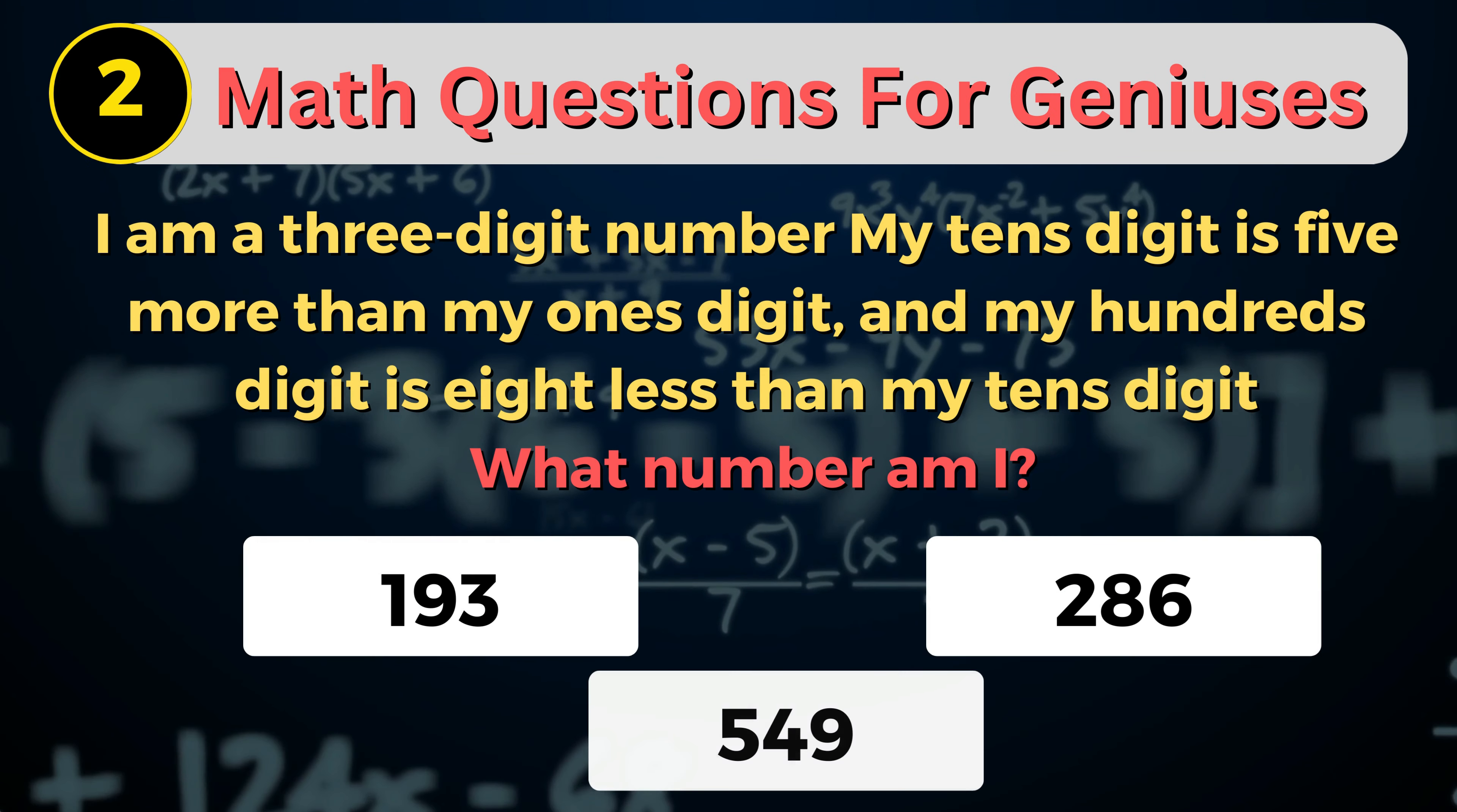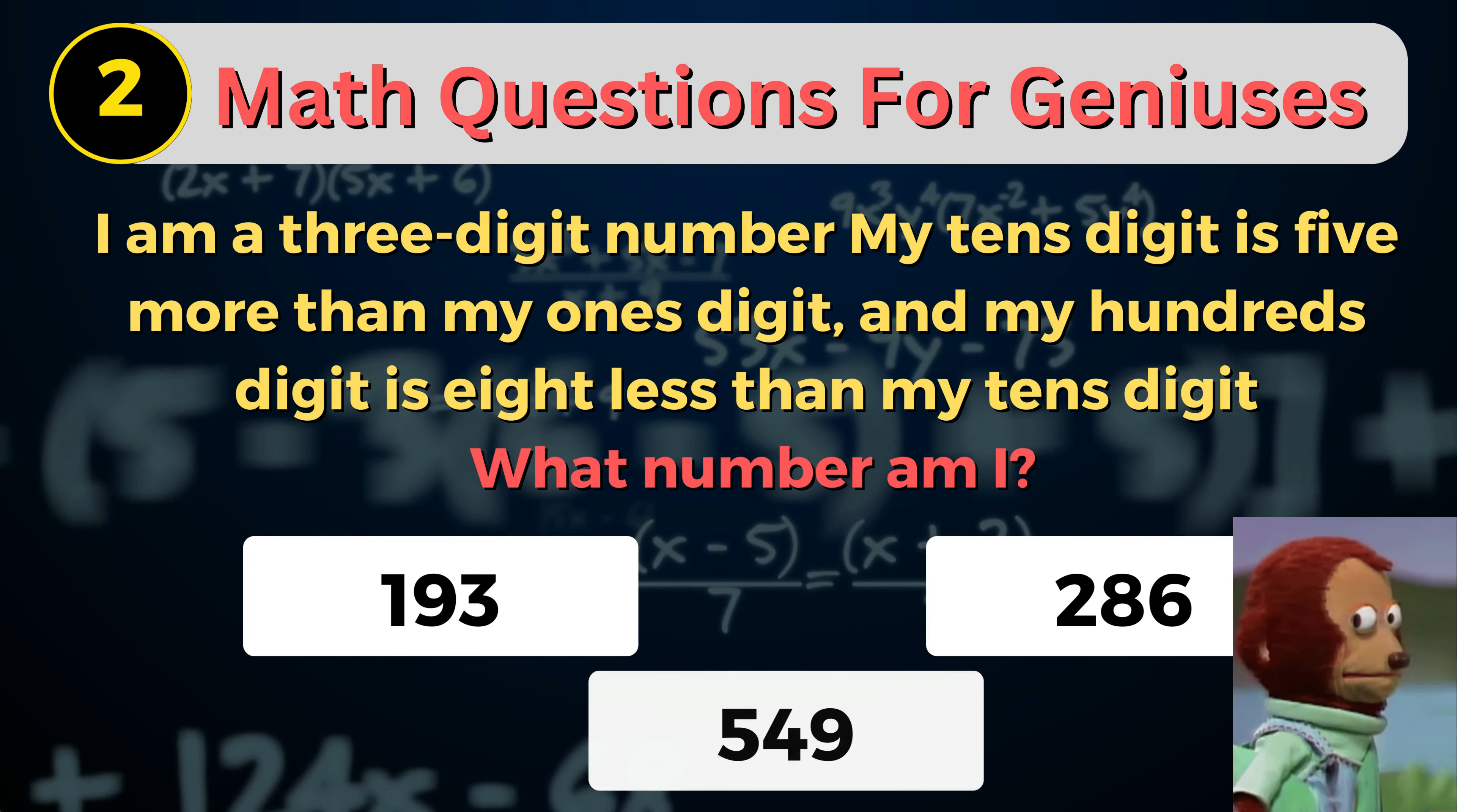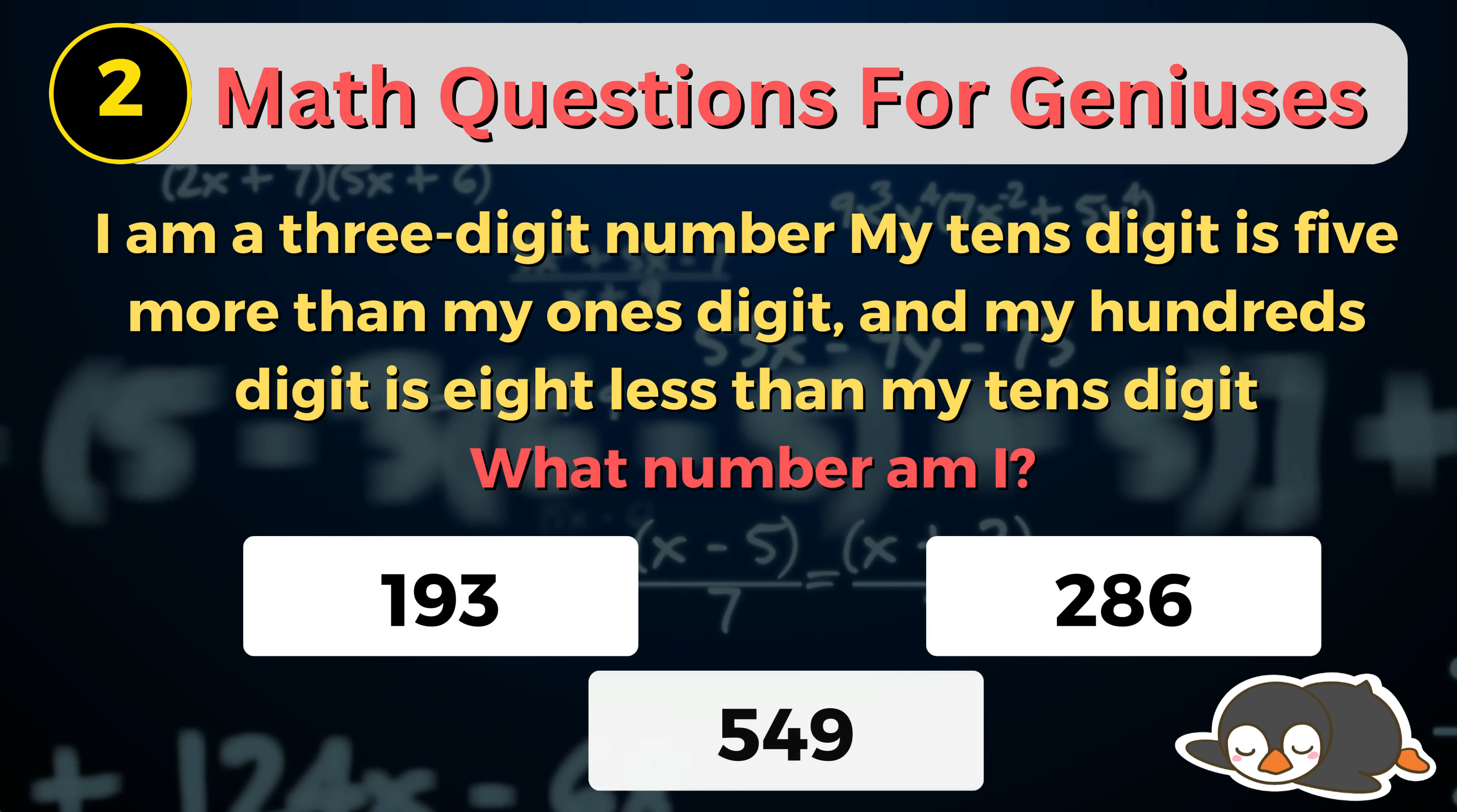Number 2. I am a 3-digit number. My 10's digit is 5 more than my 1's digit and my 100's digit is 8 less than my 10's digit. What number am I?